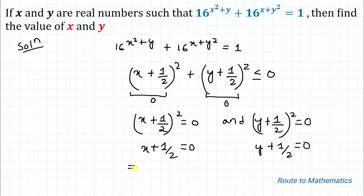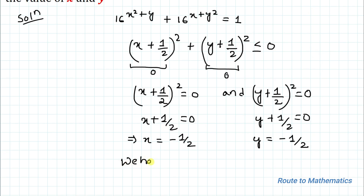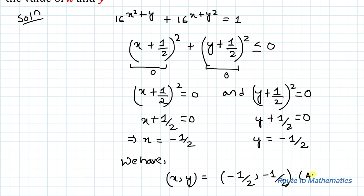This implies x = -1/2 and y = -1/2. So we have one and only solution: (x, y) = (-1/2, -1/2) is our answer.